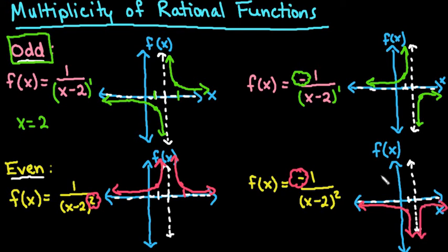So the location is key. If you have an odd degree, it's going to be on opposite sides of the horizontal asymptote. If you have an even degree, it's going to be on the same side of the horizontal asymptote.